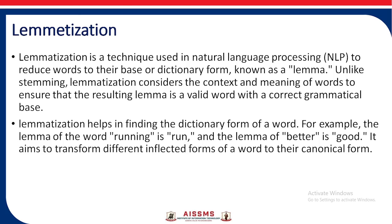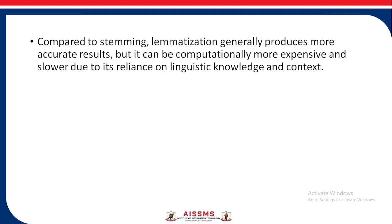Lemmatization is a technique used in NLP to reduce words to their base or dictionary form, known as a lemma. Unlike stemming, lemmatization considers the context and meaning of words to ensure that the resulting lemma is a valid word with a correct grammatical base. Lemmatization helps in finding the dictionary form of a word. For example, the lemma of 'running' is 'run', and the lemma of 'better' is 'good'. It aims to transform the different inflected forms of a word to its canonical form. Compared to stemming, lemmatization generally produces more accurate results, but it can be computationally more expensive and slower due to its reliance on linguistic knowledge and context.